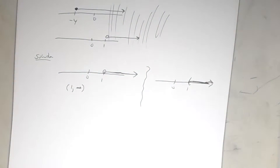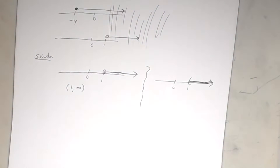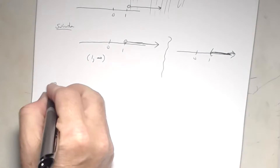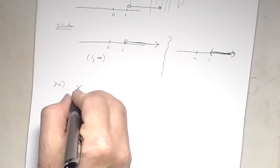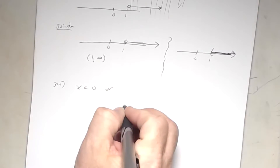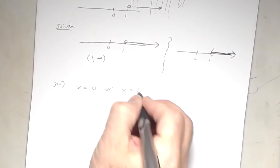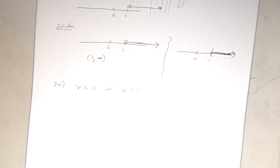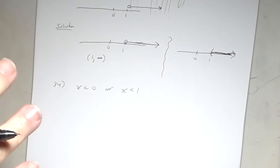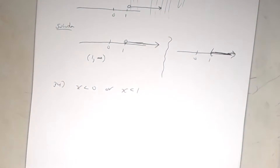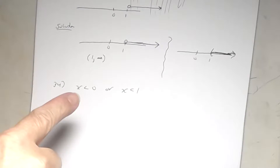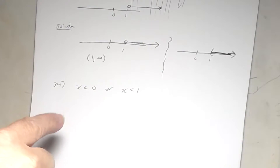Now let's look at an 'or' statement — number 34. You have x < 0 OR x < 1. In an 'or' statement, the solution has to satisfy either one — it could satisfy one or both. An 'and' statement has to satisfy both, which is why we look for intersection. An 'or' statement just has to satisfy either one, which is why we look for union — anything shaded is a solution.